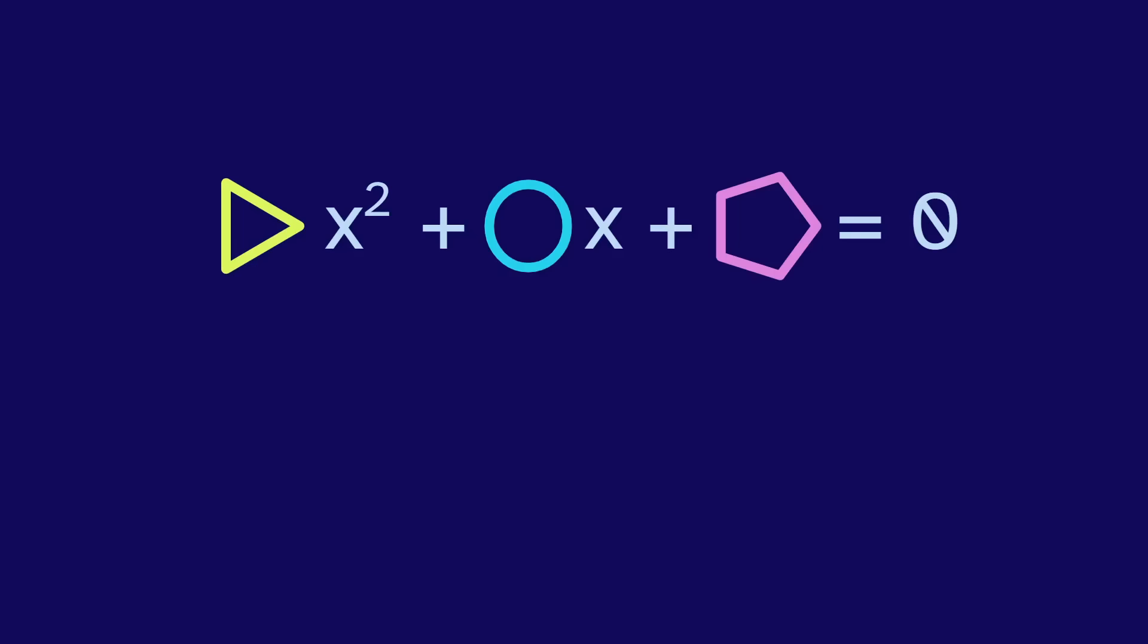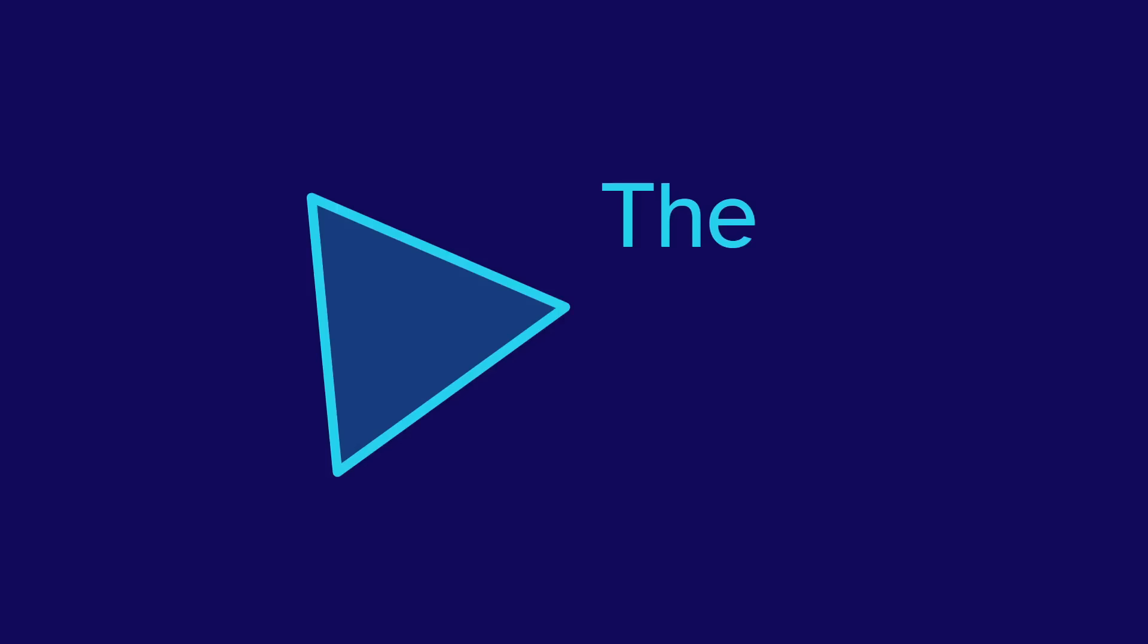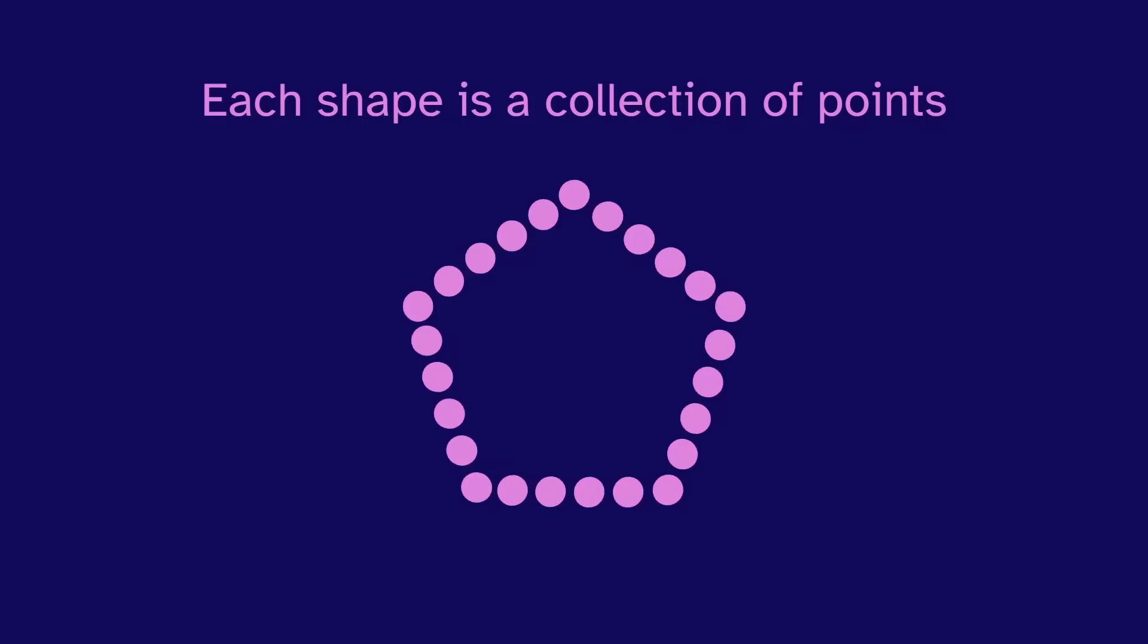What does it mean to put shapes in this equation instead of just regular numbers? Each shape is a collection of points, and each point is a complex number.